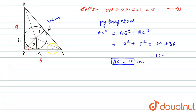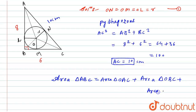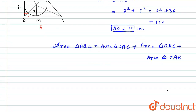The bigger triangle ABC is nothing but the combination of these three smaller triangles. So I can say that the area of triangle ABC equals the area of triangle OAC plus the area of triangle OBC plus the area of triangle OAB.